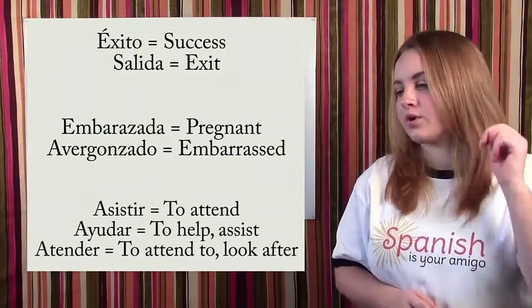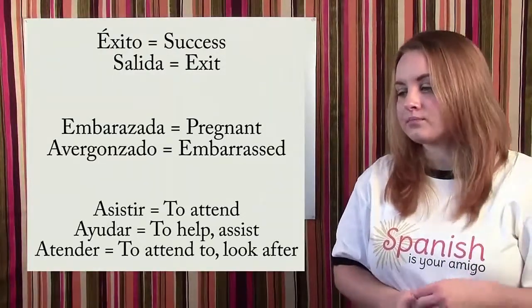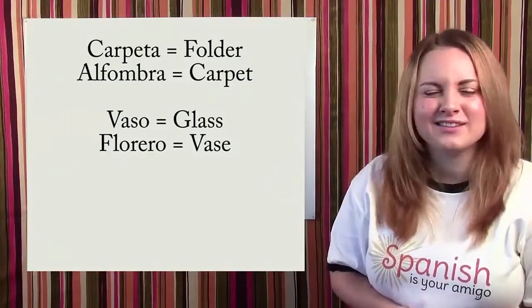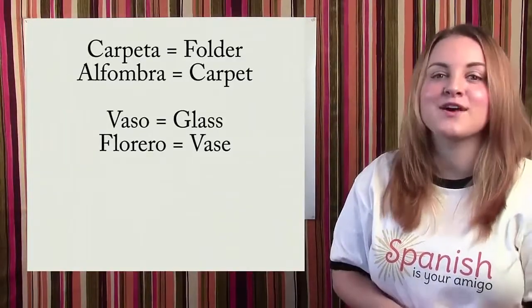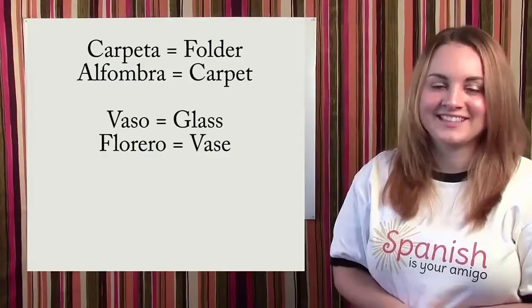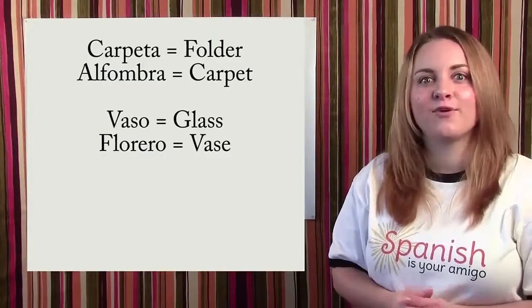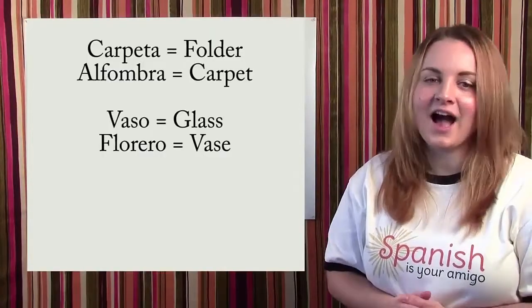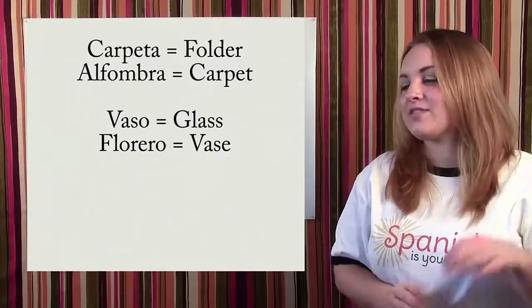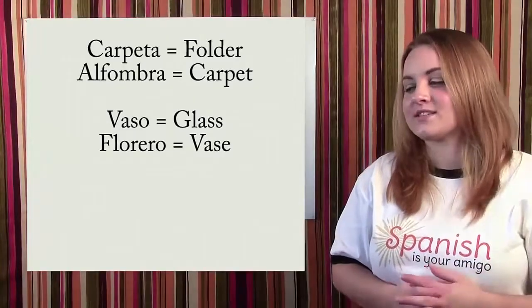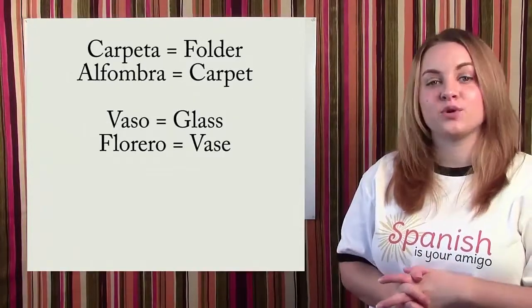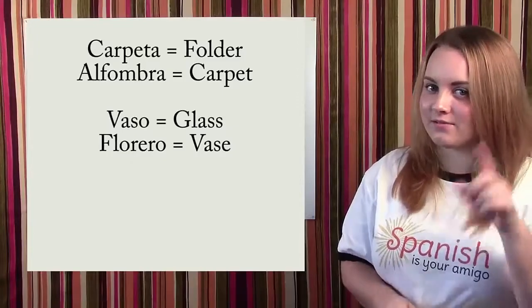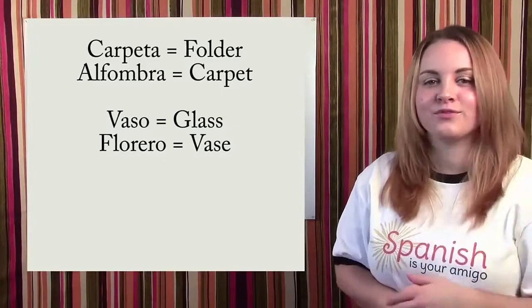There are two more words here. Carpeta — carpeta looks like it should be the word carpet, but it's not. Carpeta means folder. And the real word for carpet is alfombra. The last word is vaso. Vaso means glass, not vase. The word for vase is florero.